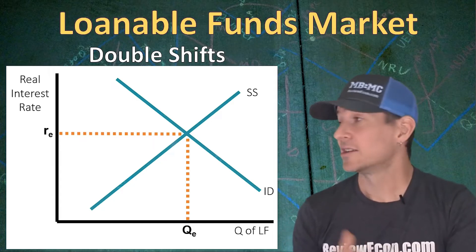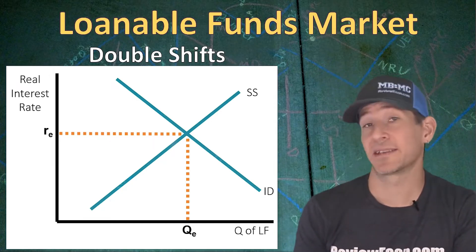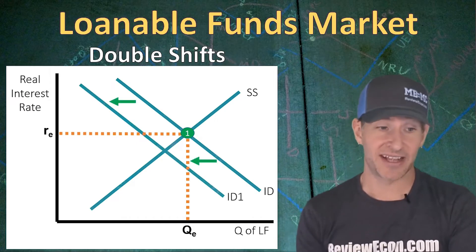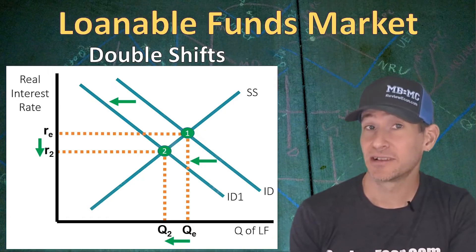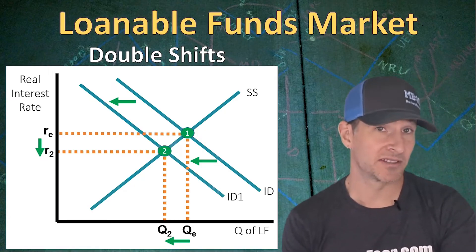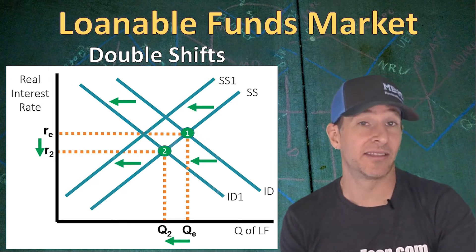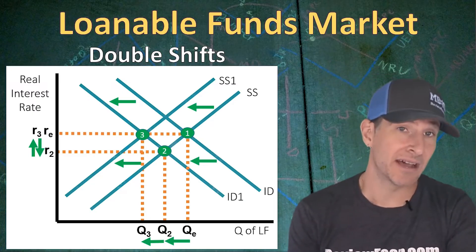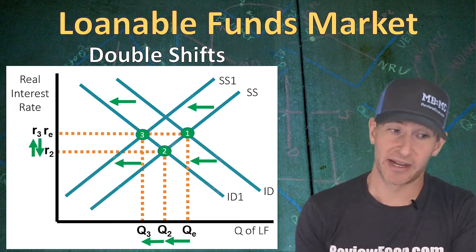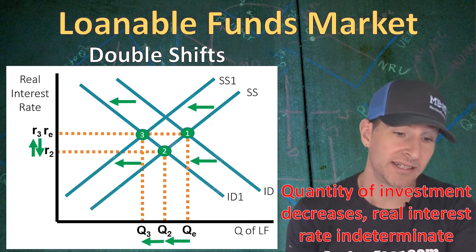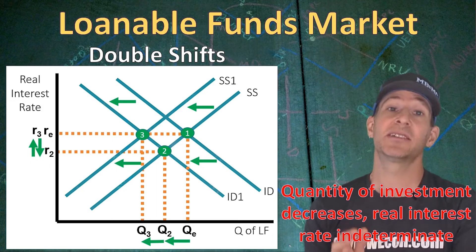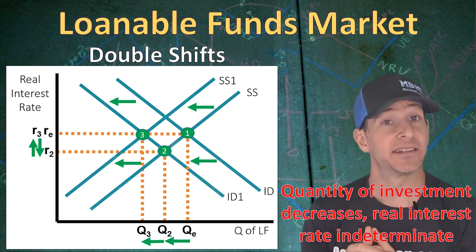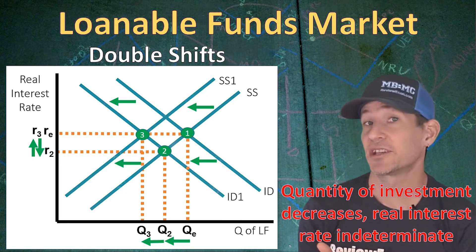Just like in other graphs in this class, we could also have double shifts here. If we have a double shift, then one of the axes is going to be indeterminate. Starting from the first equilibrium, if we see a decrease in the investment demand curve — a shift to the left — that puts us at equilibrium point two, with a lower equilibrium quantity and a lower real interest rate. If we also have a decrease in the supply of loanable funds, that puts us at equilibrium point three. Since both shifts decrease the quantity, the quantity is definitely going to decrease, but the real interest rate will be indeterminate. If you see a double shift question, just graph it out: if the two shifts increase and decrease one axis, that axis is indeterminate; if both shifts decrease it, it for sure decreases; if both shifts increase it, it for sure increases.